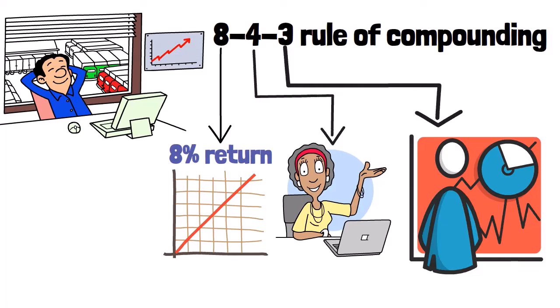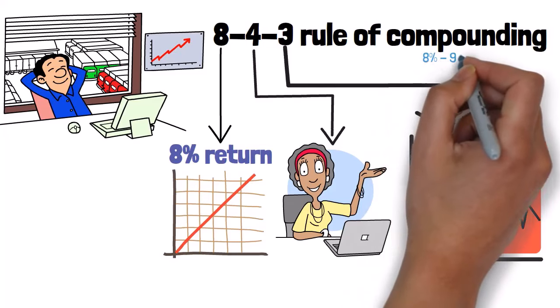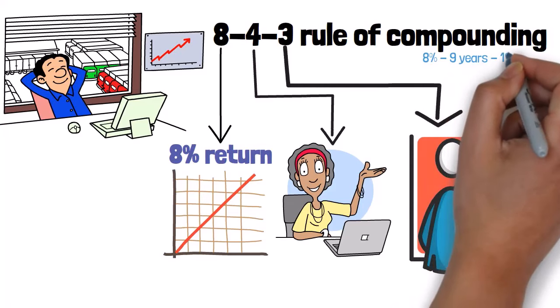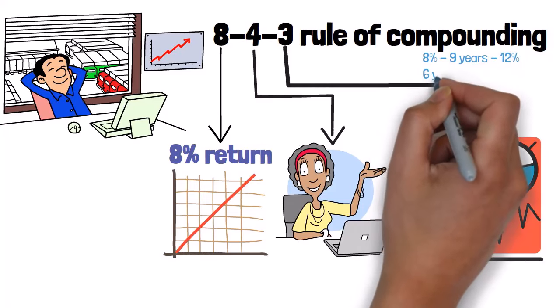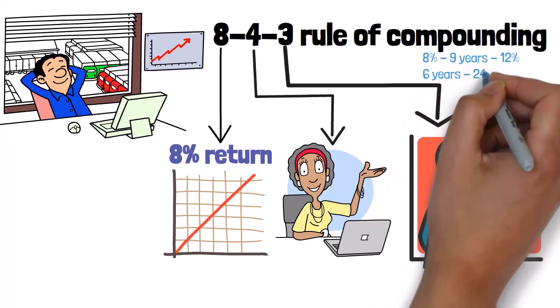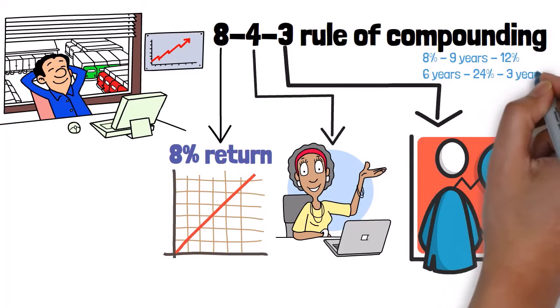All in all, the 843 rule states that if you invest a certain amount of money at an 8% annual return, you'll double your money in 9 years. But if you bump up that annual return to 12%, you'll double your money in just 6 years. And if you manage to snag a 24% annual return, you'll double your money in a mere 3 years.